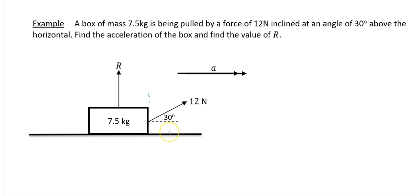On to a couple of examples on this. So this example is where we're using our f equals ma. It says a box of mass 7.5 kilograms is being pulled by a force of 12 newtons inclined at 30 degrees above the horizontal. Find the acceleration of the box and find the value of r. What we must also add in to our diagram is our weight, which is mg. So 7.5 times g going vertically down. And then we are good to go. So I'm going to resolve vertically first of all to find my r.